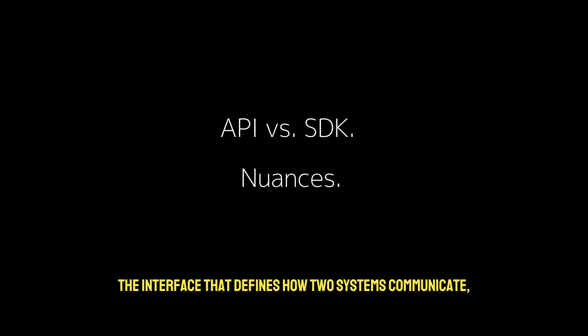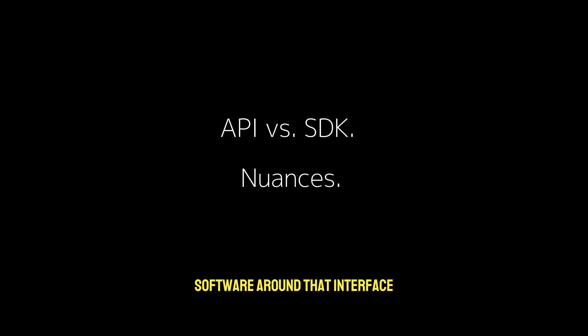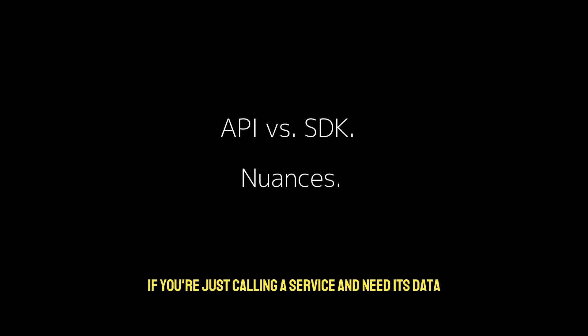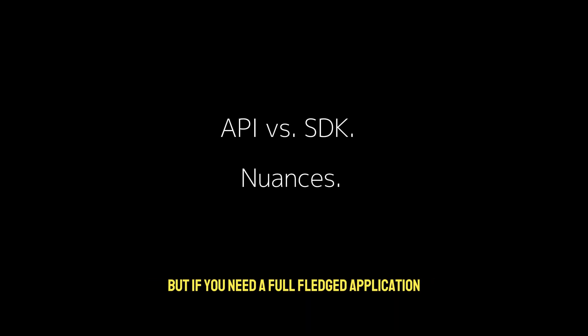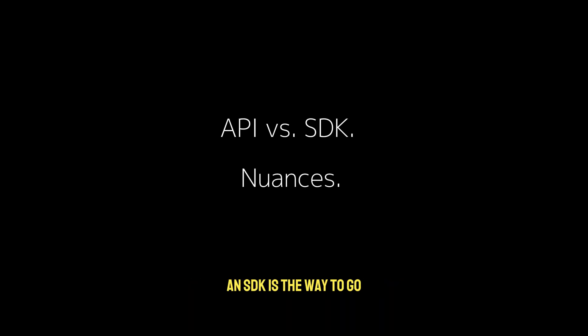To wrap it up, an API is the interface that defines how two systems communicate, while an SDK is the toolset that helps you build software around that interface. APIs enable integration, while SDKs accelerate and simplify implementation. If you're just calling a service and need its data, you're working with an API. But if you need a full-fledged application that integrates that service deeply, an SDK is the way to go.